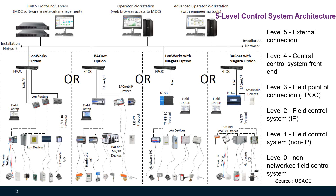Let's review the five-level control system architecture from Unified Facility Criteria first. Look at this architecture — you'll see there are four main options: LonWorks, BACnet, LonWorks with Niagara, and BACnet with Niagara. What are they? How do they compare?